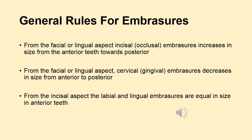In simple words, incisal embrasure will increase in size and cervical embrasure will decrease in size as you move from anterior teeth towards the posterior teeth. The third rule is from the incisal aspect, labial and lingual embrasures are going to be equal in size.